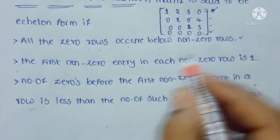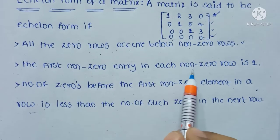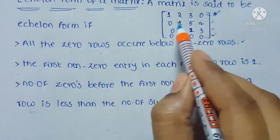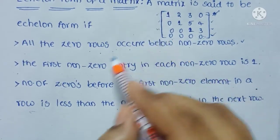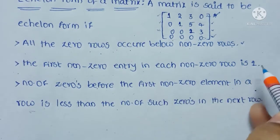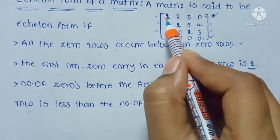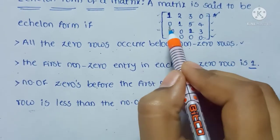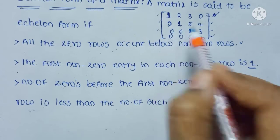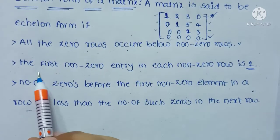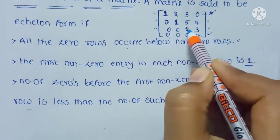The next condition: the first non-zero entry in each non-zero row is 1. Non-zero rows are R1, R2, and R3. The first non-zero entry in each non-zero row is 1. If you see here, first non-zero entry is 1. In the second row, we have a zero, but the first non-zero number is 1. The first non-zero entry in each non-zero row is 1.